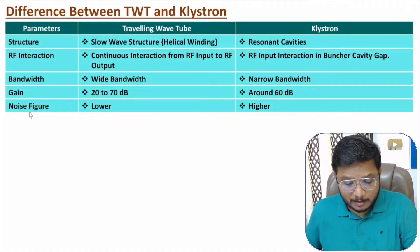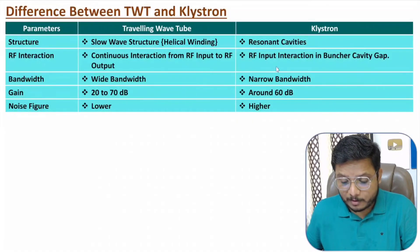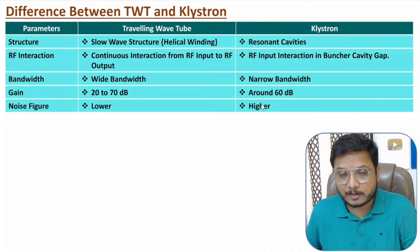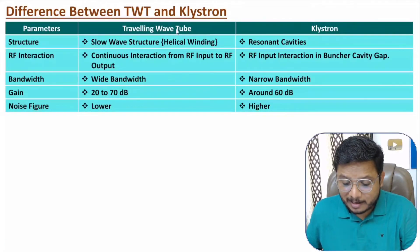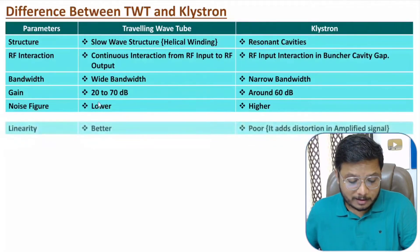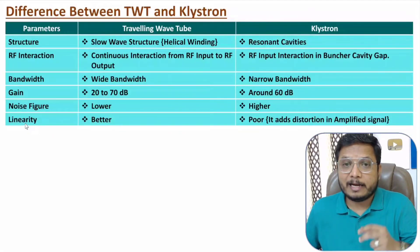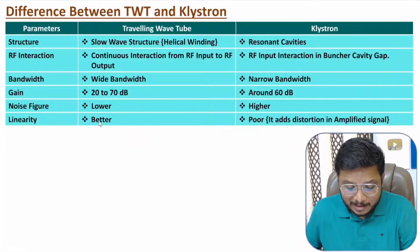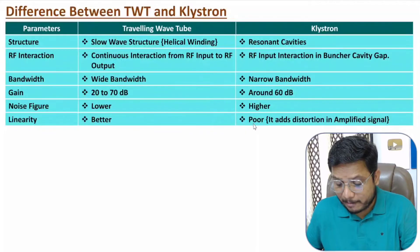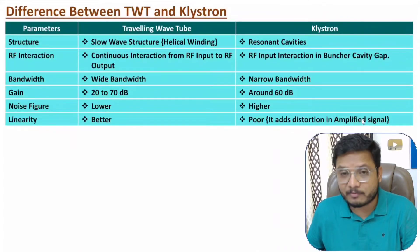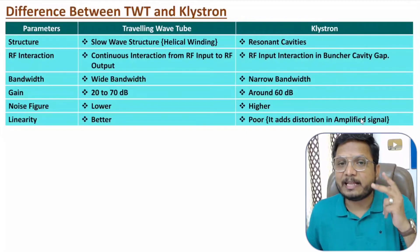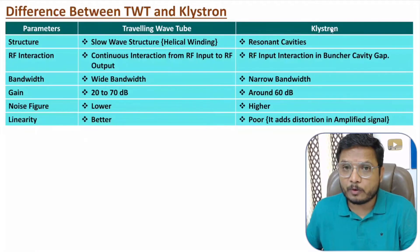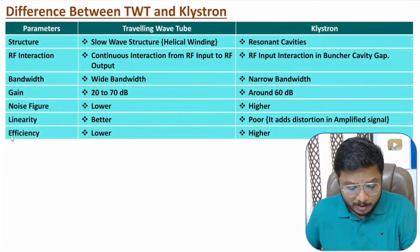In terms of noise figure, the traveling wave tube has lower noise and therefore a lower noise figure, while the klystron has higher noise. In terms of noise immunity, the traveling wave tube is better. Regarding linearity, the traveling wave tube offers better linearity while the klystron offers poor linearity, which adds distortion to the amplified signal. In terms of efficiency, the traveling wave tube has lower efficiency compared to the klystron.